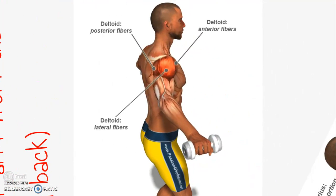Here's a picture of the deltoids. You'll see that it says anterior fibers, lateral fibers, and posterior fibers. Those three words — anterior, lateral, and posterior — mean front, middle or side, and back or rear of the deltoids. In this picture he is performing the dumbbell lateral raises. Dumbbells, as you can see, are the handheld weights.